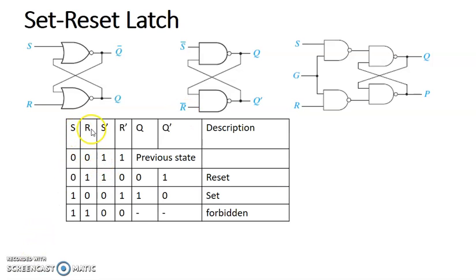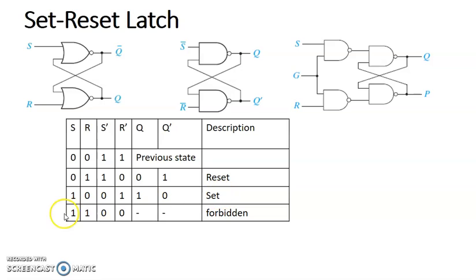This is the truth table for the SR flip-flop. S and R inputs: 0,0 — 0,1 — 1,0 — 1,1. Since we are providing S-bar and R-bar here, it has been written as S-bar R-bar. So 0,0 becomes 1,1; 0,1 becomes 1,0; 1,0 becomes 0,1; 1,1 becomes 0,0. The output of the SR flip-flop truth table: when both are 0,0 it is the previous state; 0,1 is reset; 1,0 is set, output 1,0; then 1,1 is forbidden — it is unpredictable, it can be either 1 or 0.